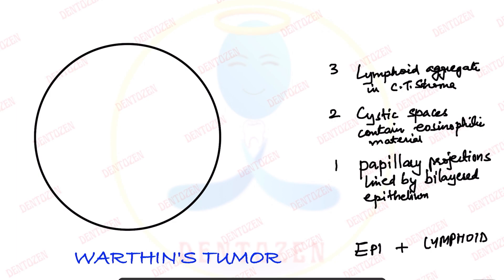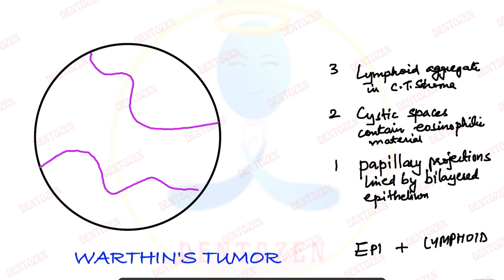Let's draw them. First are the papillary projections, made up of bilayer epithelium. We draw finger-like projections of the epithelium from both sides, showing epithelium projecting into the cystic lumen, which is the central space, and it can be filled with pink material.